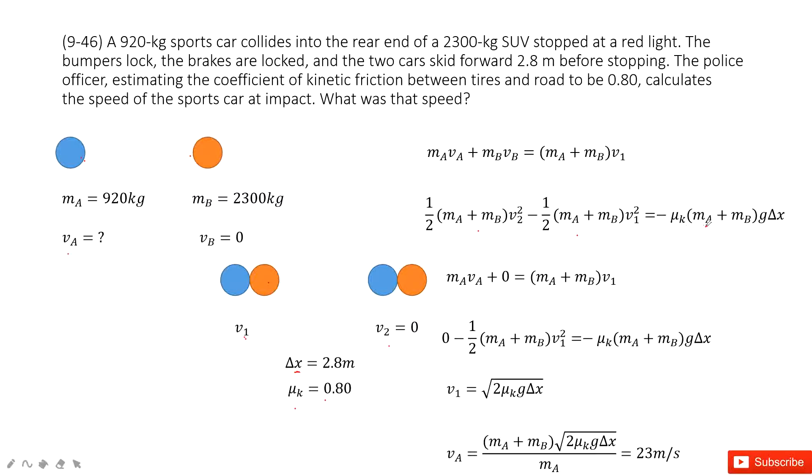So the friction is μ_k(m_A + m_B)g. This is the friction force times the displacement it moved. And we can see the friction is backward. Δx is forward. So we get the negative sign there. And then, we solve these two equations. We can get the final answer.